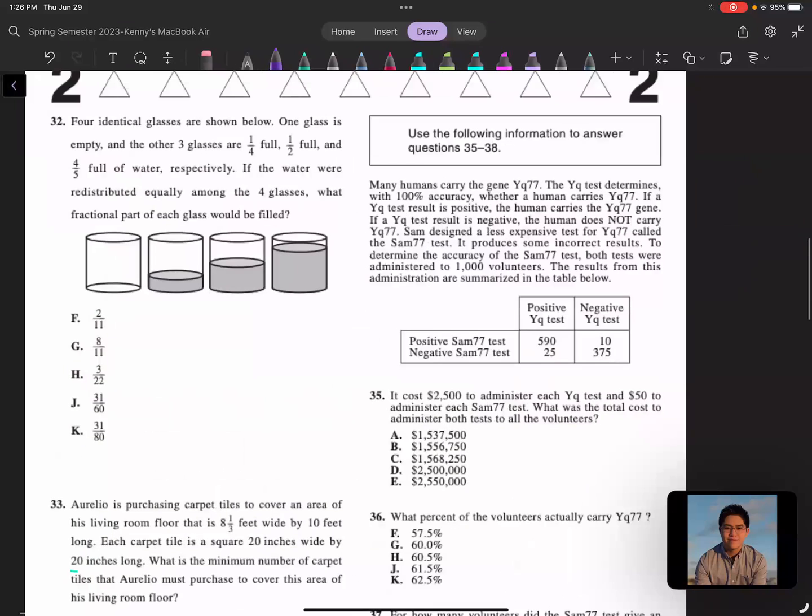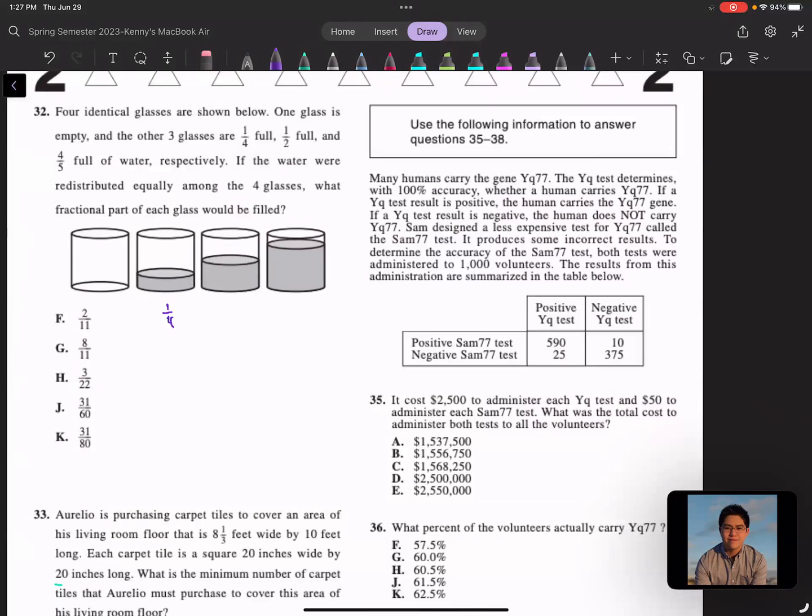Question 32: Four identical glasses are shown below. One glass is empty, the other three glasses are one-fourth full, one-half full, and four-fifths full of water, respectively. If the water were redistributed equally among the four glasses, what fractional part of each glass would be filled? Basically, I have a quarter here, a half here, and four-fifths. It's asking what fractional part of each glass would be filled if I were to make this all equal.